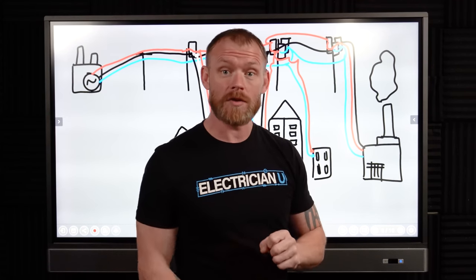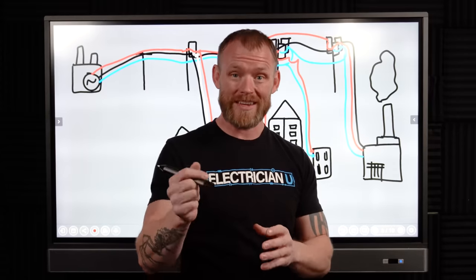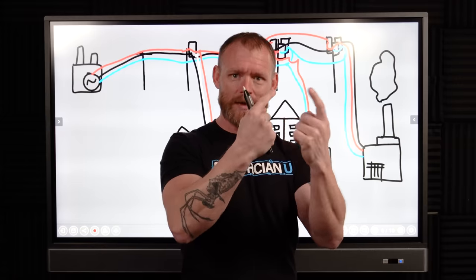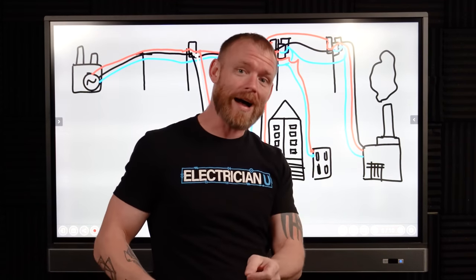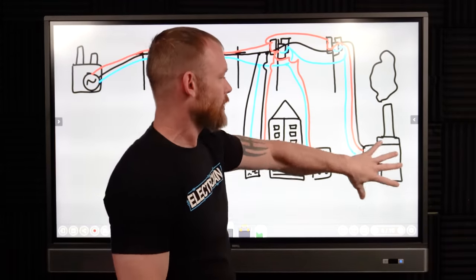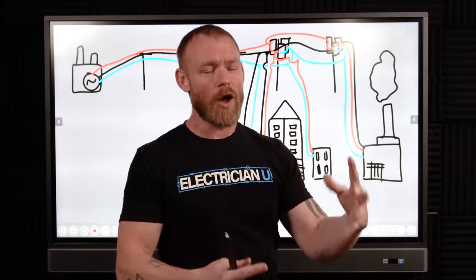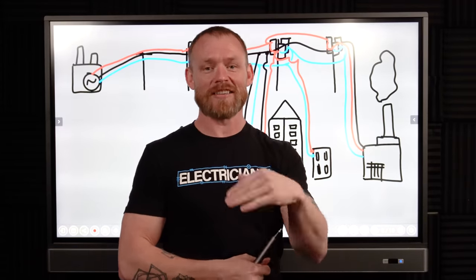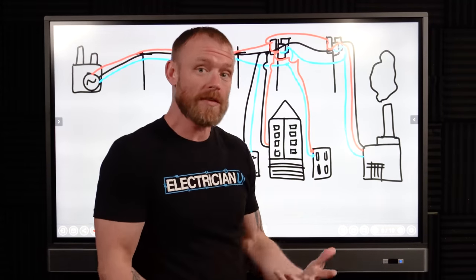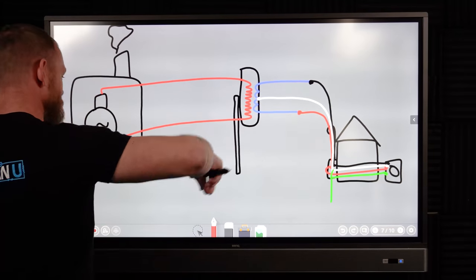There are grounded systems and ungrounded systems. In code, 'grounded' refers to the neutral and 'ungrounded' refers to the hot — they're both doing the same thing, like turning a light bulb on. Grounding conductors — the green or bare wire — are the equipment grounding conductors. An 'ungrounded system' means there is no grounded conductor or neutral run, because all of the equipment is running on the three phases and there's no need for a neutral.